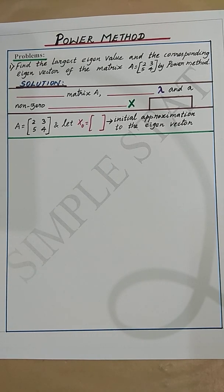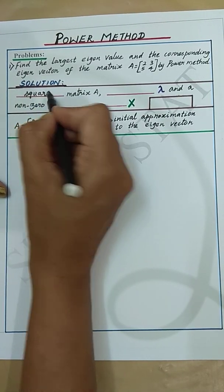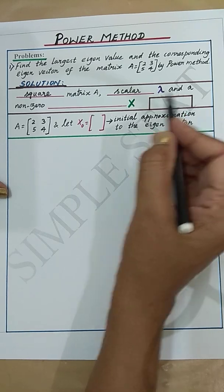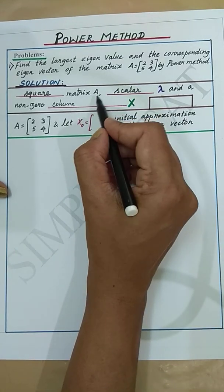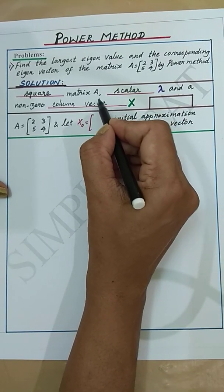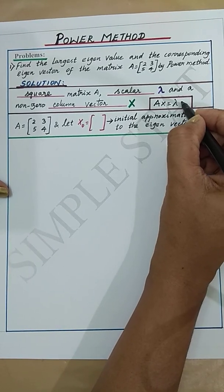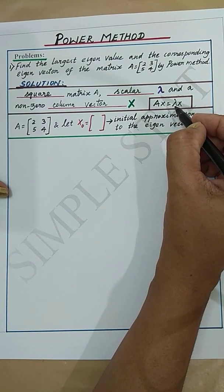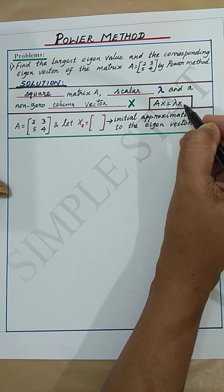Before doing power method let's define eigenvalue of a matrix. For every square matrix A there is a scalar lambda and a non-zero column vector X such that AX equal to lambda X. Then the scalar lambda is called an eigenvalue of A and X is the corresponding eigenvector.